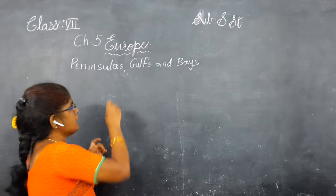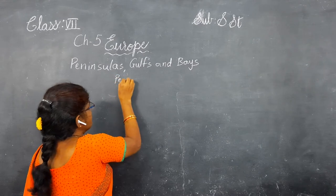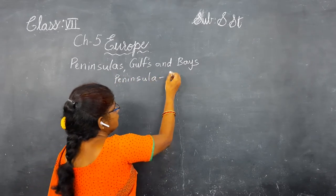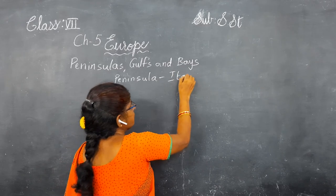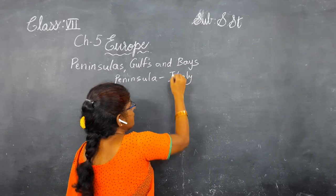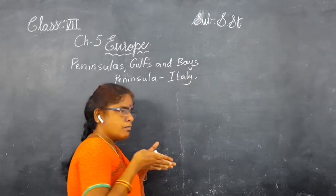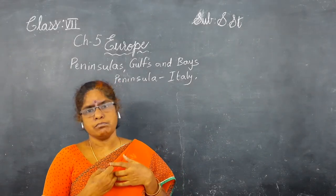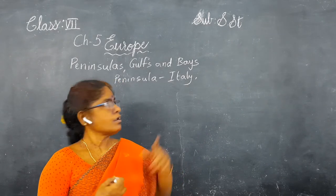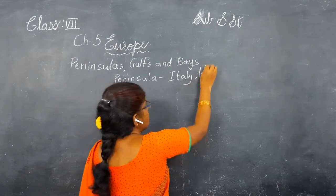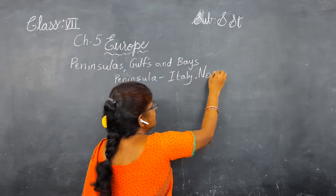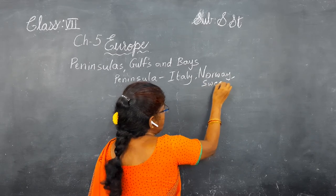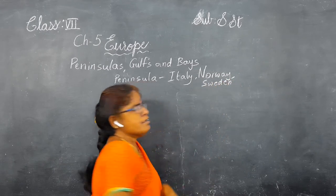What are the examples of peninsulas? Italy — it is penetrated into the Mediterranean. Italy, Norway, and Sweden are also peninsulas — peninsular countries only.